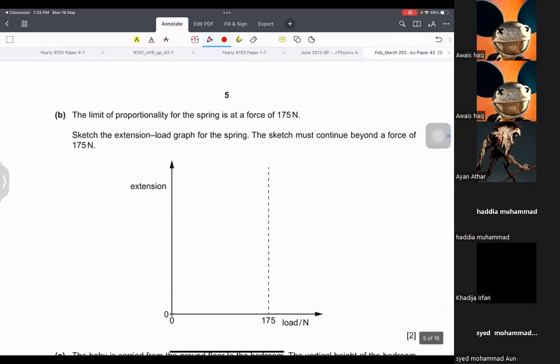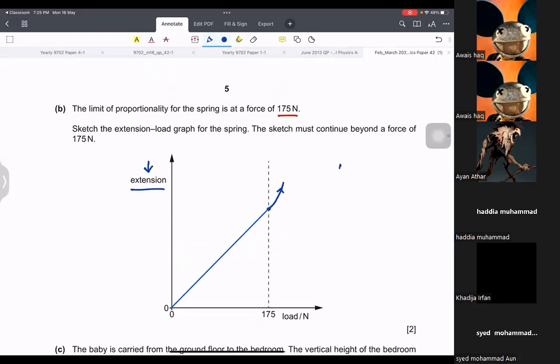Limit of proportionality of the spring is 175 newtons. Sketch extension load graph. Your line will start from the origin, it will go straight till 175, and then the line is going to bend like this. Why is it going up? Because I've always told you, the line bends towards the extension with extensions on the y-axis. If the same was given like this with force here and extension, then you would make it like this and then bend it towards the extension.